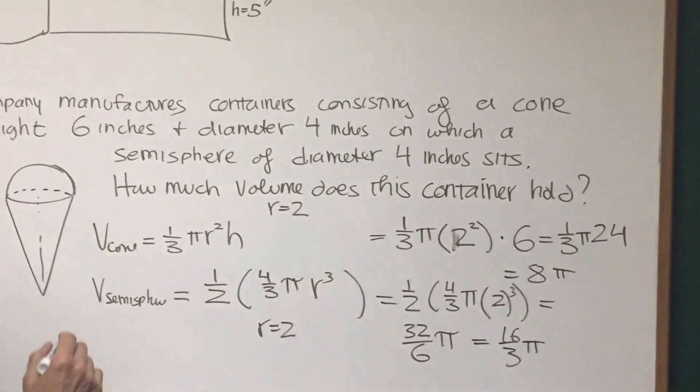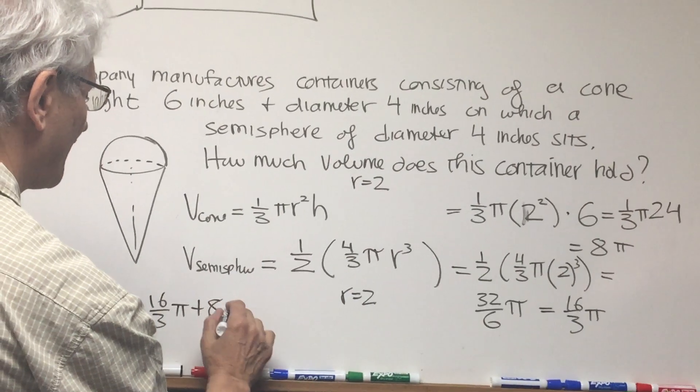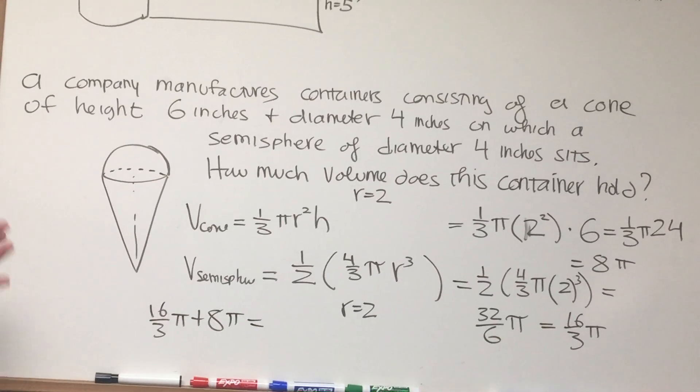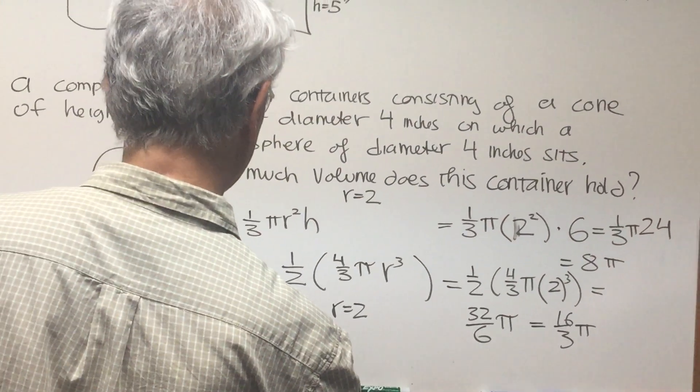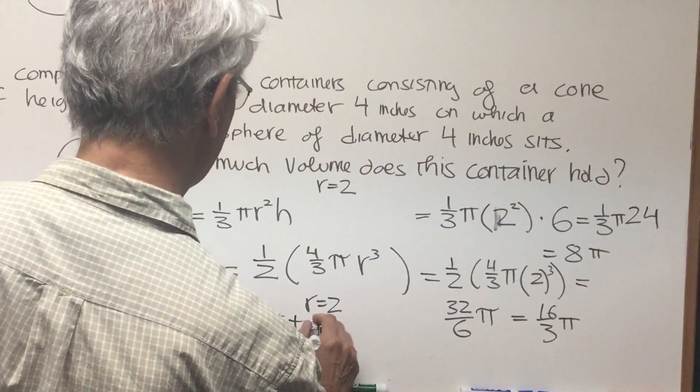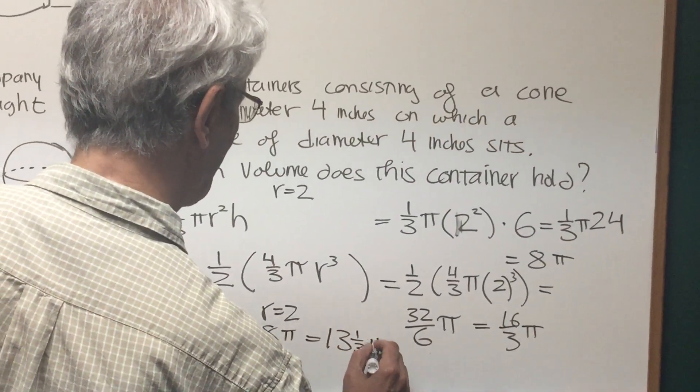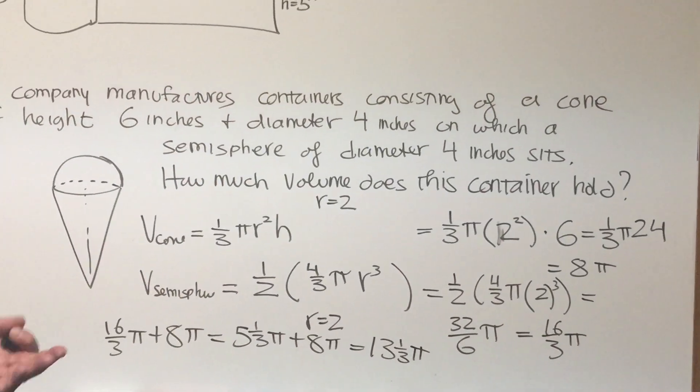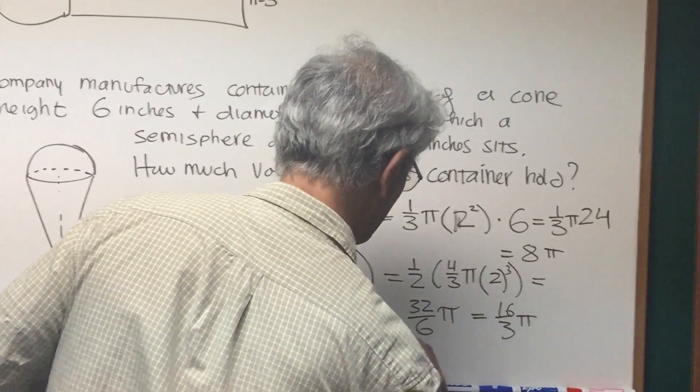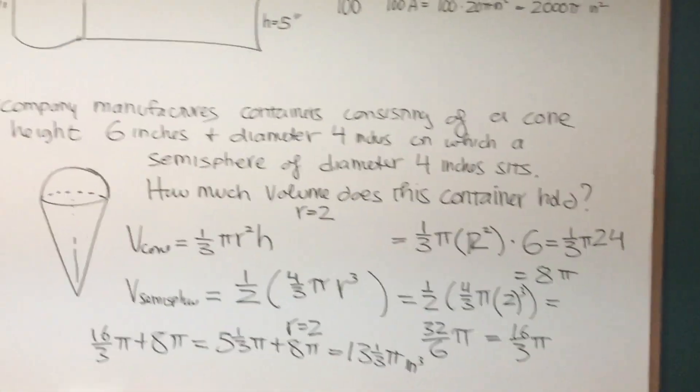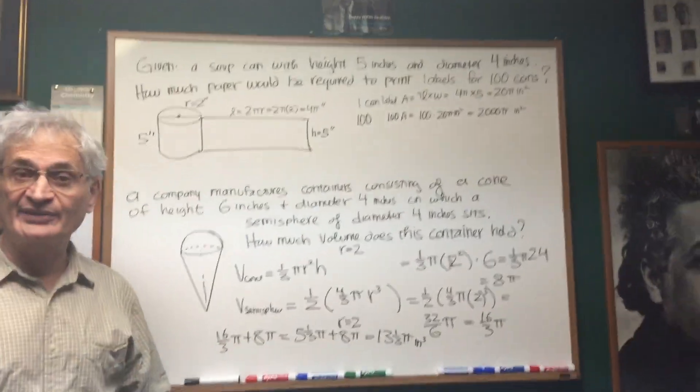So if I add the two figures together, 16/3 π plus 8π, that's going to give us the volume of the entire container. So this is equal to what? 5 and 1/3 π plus 8π, the result of which is 13 and a third π cubic units, cubic inches, because that's what the unit is, cubic inches. So there we are, we just have to know the formulas for those respective volumes, and that's the whole problem right there.